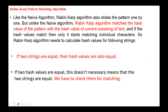Like the brute force algorithm, Rabin-Karp algorithm also slides the pattern one by one. But unlike the brute force algorithm, Rabin-Karp algorithm matches the hash value of the pattern with the hash value of the current substring of text. And if the hash values match, then only it starts matching individual characters.